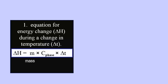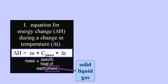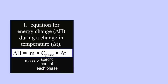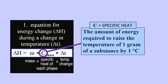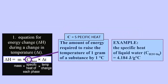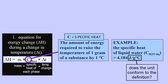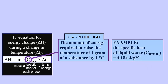Delta H equals the mass of the substance times the specific heat of each phase — solid, liquid, or gas — multiplied by the change in temperature. The specific heat, with the symbol capital C, is the amount of energy required to raise the temperature of one gram of a substance by one degree Celsius. For example, one gram of water requires 4.184 joules to increase its temperature by one degree Celsius. The specific heat of water defines one calorie — it takes one calorie to raise one gram of water by one degree Celsius — but here we will be using the SI unit joule for energy.